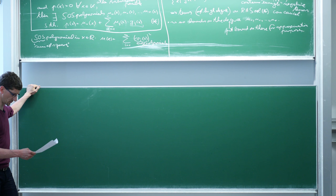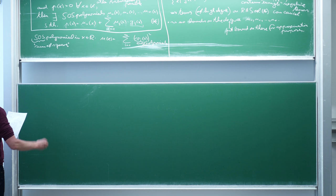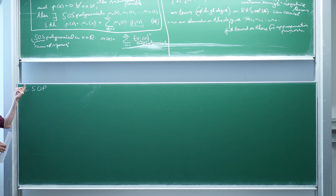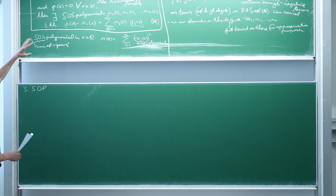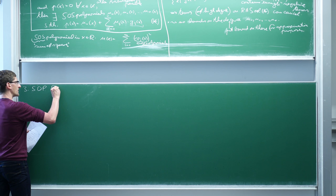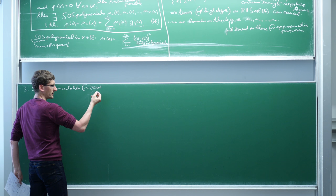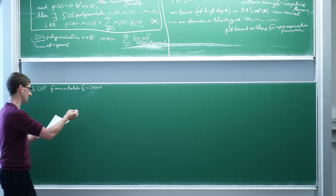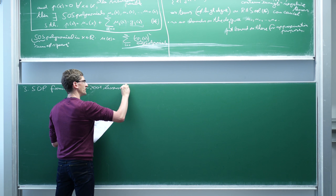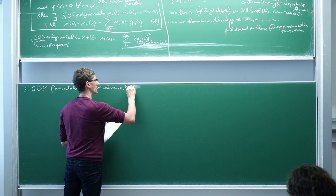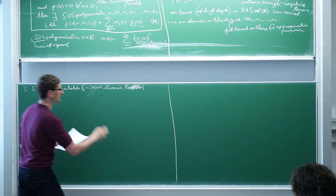How to formulate this as an SDP? A semi-definite program is an optimization problem which is easier to solve than this generic polynomial optimization problem. This was only fully realized relatively late — around 2001 — done independently by people like Lasserre and Parrilo, who apparently didn't know about each other. There are two steps. The first is an easy step to reformulate the problem: we would like to compute the minimum of the polynomial P(x) over all points in the set K.